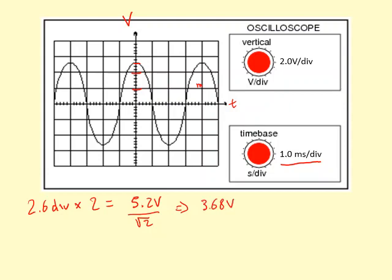If I want to find the frequency or the time period of this waveform, I'll have to measure the number of waves. We can measure from here to here — we've got 1, 2, 3, 4, 5, 6, 7, 8 divisions, and each division is worth 1.0 times 10 to the minus 3 seconds. We need to divide by 2 because there are 2 whole waves in that section. That gives us a time period of 4 times 10 to the power of minus 3 seconds.